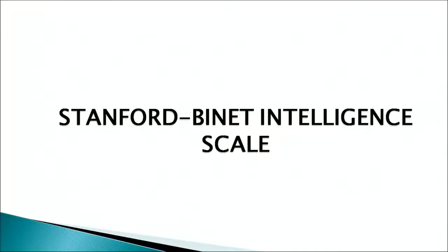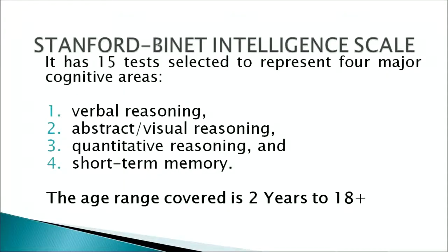Now let us discuss the different types of intelligence tests used to assess the intelligence of an individual. The first is the Stanford Binet Intelligence Scale. This scale has 15 tests and these tests are selected to represent 4 major cognitive areas. The different subtests in the Stanford Binet Intelligence Scale measure verbal reasoning, abstract or visual reasoning, quantitative reasoning, and short-term memory.